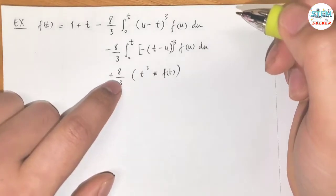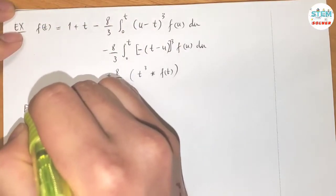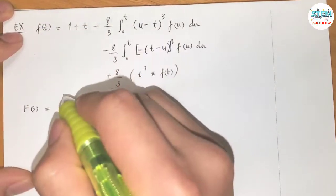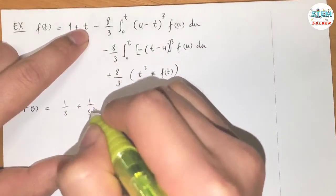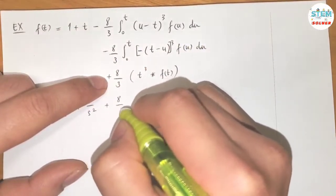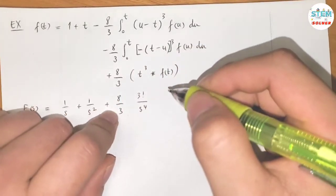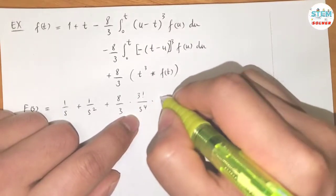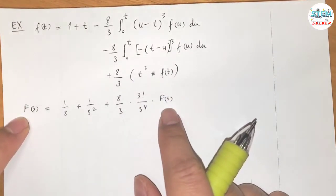This is a different way of writing convolution, and that should be T cubed convoluted with F of T. Now you have everything in terms of T, so I can take the function from both sides. On the left side I have F of T, F of S equals on the right side I have L of this is 1 over S, L of this is 1 over S squared, L of plus 8 thirds - L of this is 3 factorial over S to the 4th times capital F of S.